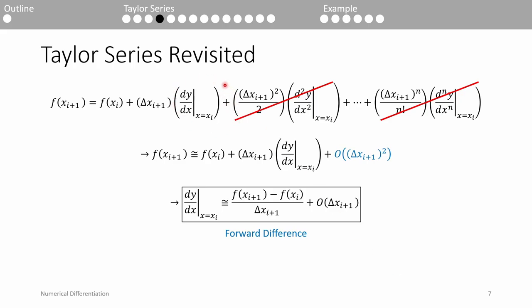Suppose we stop expanding after the first derivative term. Truncation errors arise from using an approximation in lieu of the exact mathematical procedure. When we stop expanding, we introduce some truncation error. We replace all the terms we truncated with a placeholder variable called O, which stands for big O notation. Big O notation represents the relative amount of truncation error. This statement does not read O times delta xi plus 1 squared; rather, it reads O is a function of delta xi plus 1 squared — kind of like how y of x is not y times x, but y is a function of x. It means the truncation error is proportional to the square of the distance between the current point and the point in front of it.